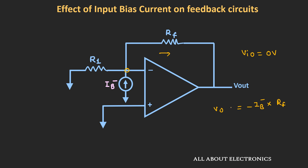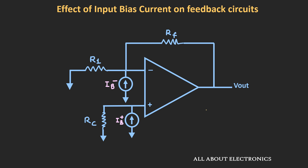This output voltage is commonly known as the output offset voltage due to the input bias current, and is denoted by VOO. This output offset voltage is proportional to the input bias current and the feedback resistance RF. As the value of RF increases, the error in the output voltage also increases. This error can be minimized by connecting an offset compensation resistor at the non-inverting terminal. To find the total output offset voltage with this compensation resistor, we apply the superposition theorem — considering one current source at a time and then adding the individual output voltages.